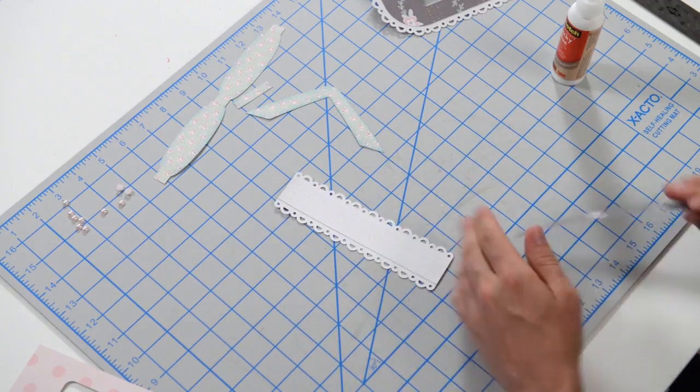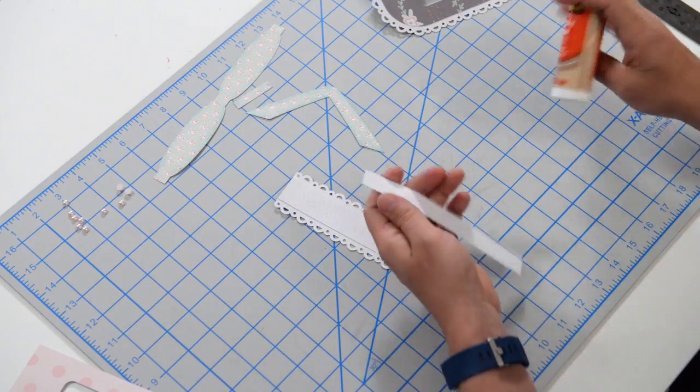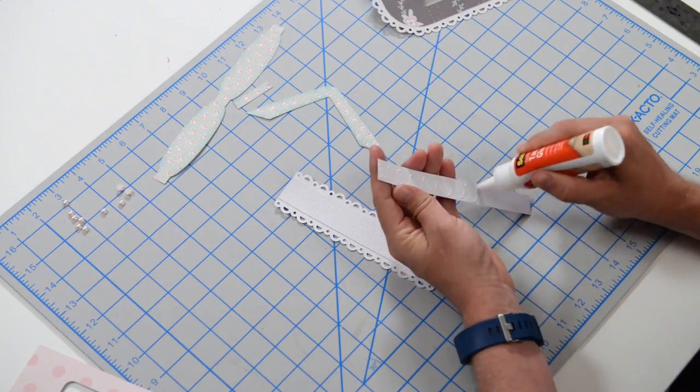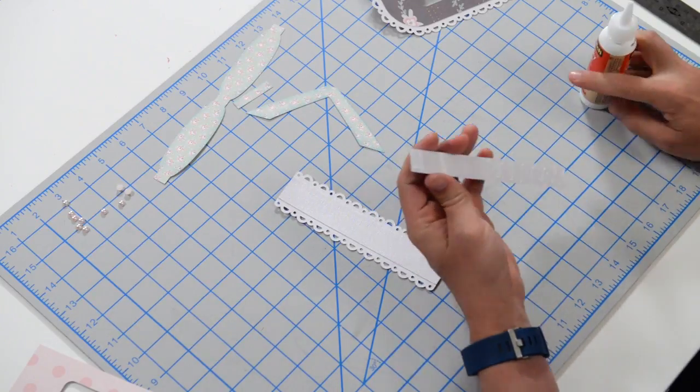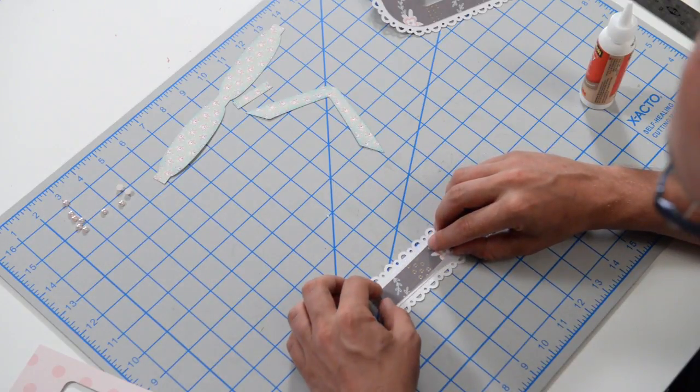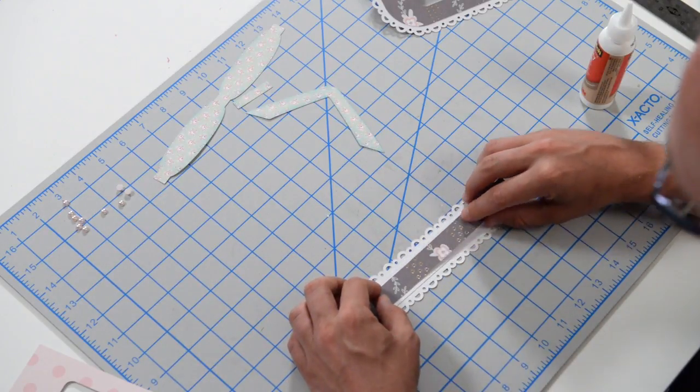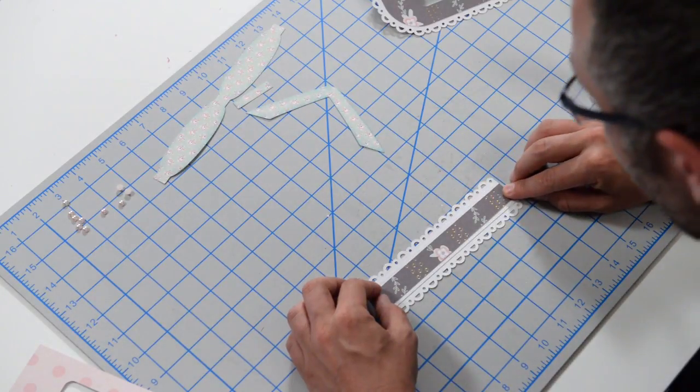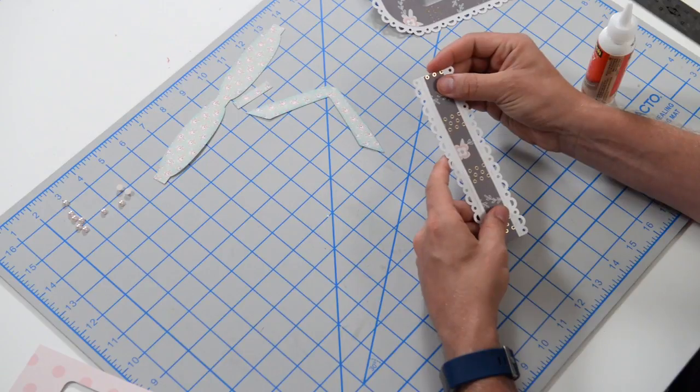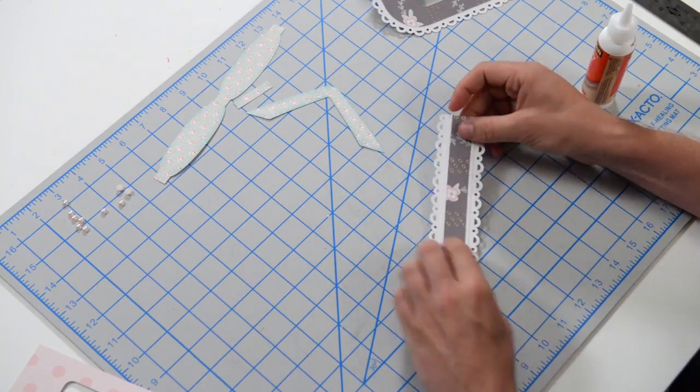And then we're going to take this accent piece here and get that glued nice and centered onto the existing pieces that we have here. So do your best to get that nice and lined up and centered. Make sure it's nice and flush with the top as well. And I need to take a look at that from a different angle. That looks good.